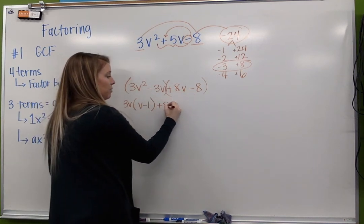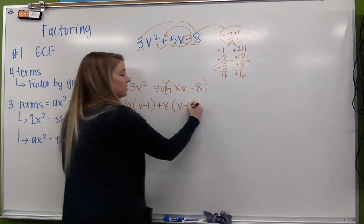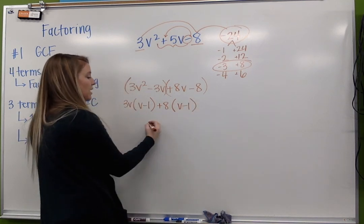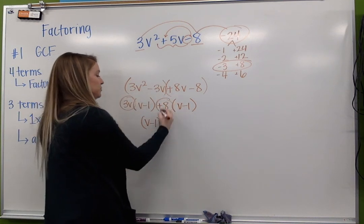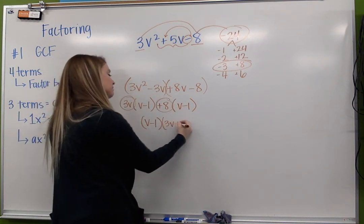Here I have a 3v in common, which leaves me with v - 1. Here I have a positive 8 in common, which leaves me with v - 1. So together, we have the v - 1, and I'm left with 3v + 8.